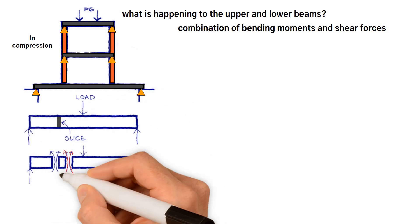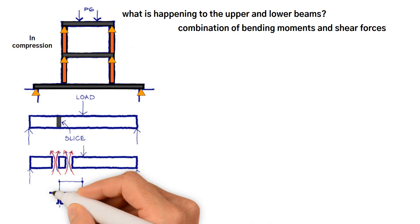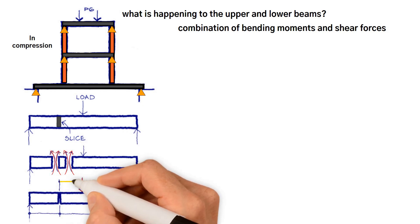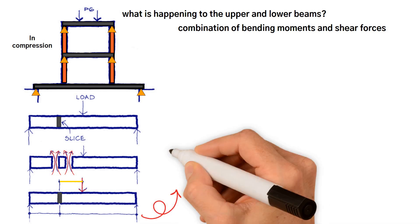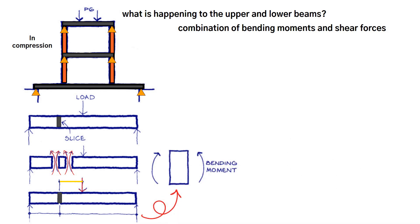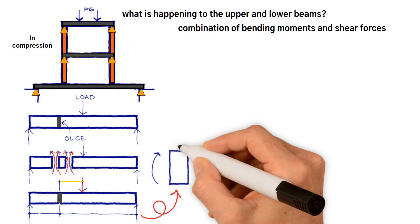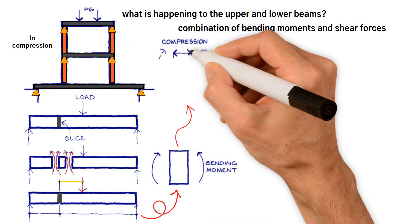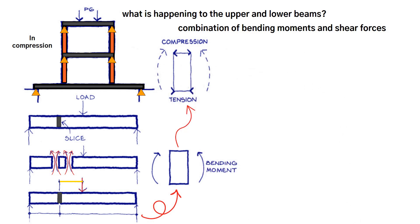Each side of the slice is being bent by a moment. The moments at the slice are the forces multiplied by their distances from the slice. This causes the slice to be squashed at the top and stretched at the bottom. In other words, the top of the beam is in compression and the bottom in tension, and a pair of bending moments is bending the slice.